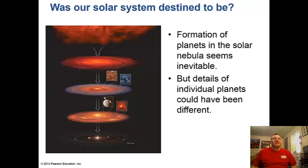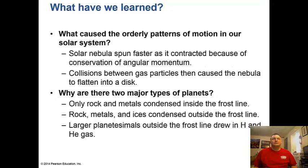Was our solar system destined to be? The formation of planets in the solar nebula seems inevitable - we have seen this thousands of times in nearby stars - but the details of individual planets could have been different. The solar nebula spun faster as it contracted because of the conservation of angular momentum, kind of like a spinning figure skater. Collisions between gas particles then caused the nebula to flatten into a disk.